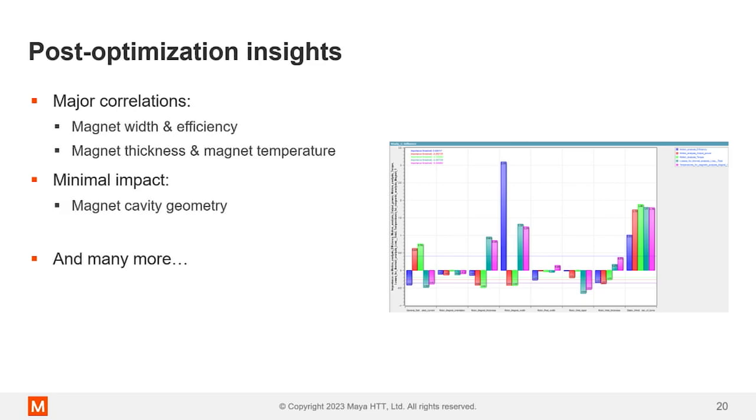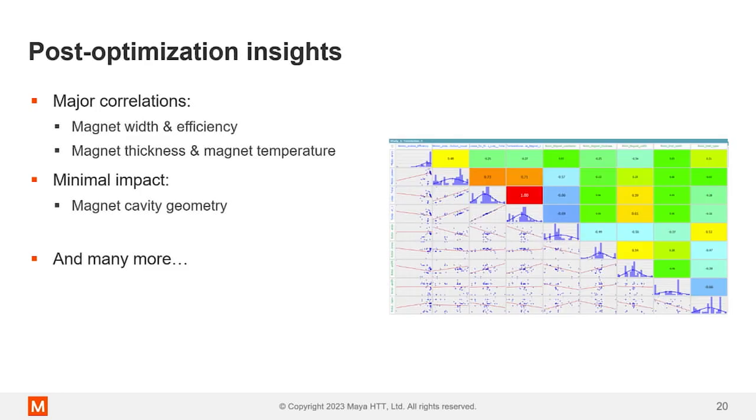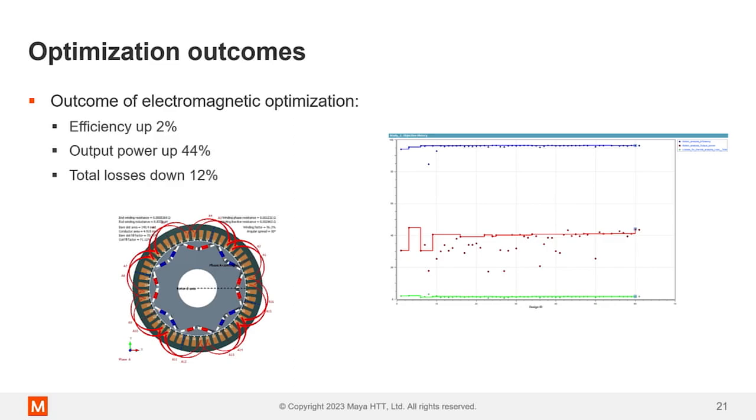When we get to the outcomes, we can take a couple insights from some neat graphics that HEADS provides us. Things like we could see some pretty massive correlations. This is just a correlation chart between inputs and outputs. We can see some big correlations. Things like magnet width correlated really highly with efficiency. And your magnet thickness and magnet temperature were pretty related. Lots of thickness, it was a cooler magnet. And we've got other insights that we could see. The magnet cavity basically didn't make a difference to our particular chosen performance. This correlation chart just shows correlations between inputs and outputs. You might have a direct relationship or an inverse relationship whereas one gets bigger, one gets smaller and how tightly tied those relationships are. You could spend days just exploring some of this data that comes out of HEADS. But we don't have days. We have about eight minutes left.